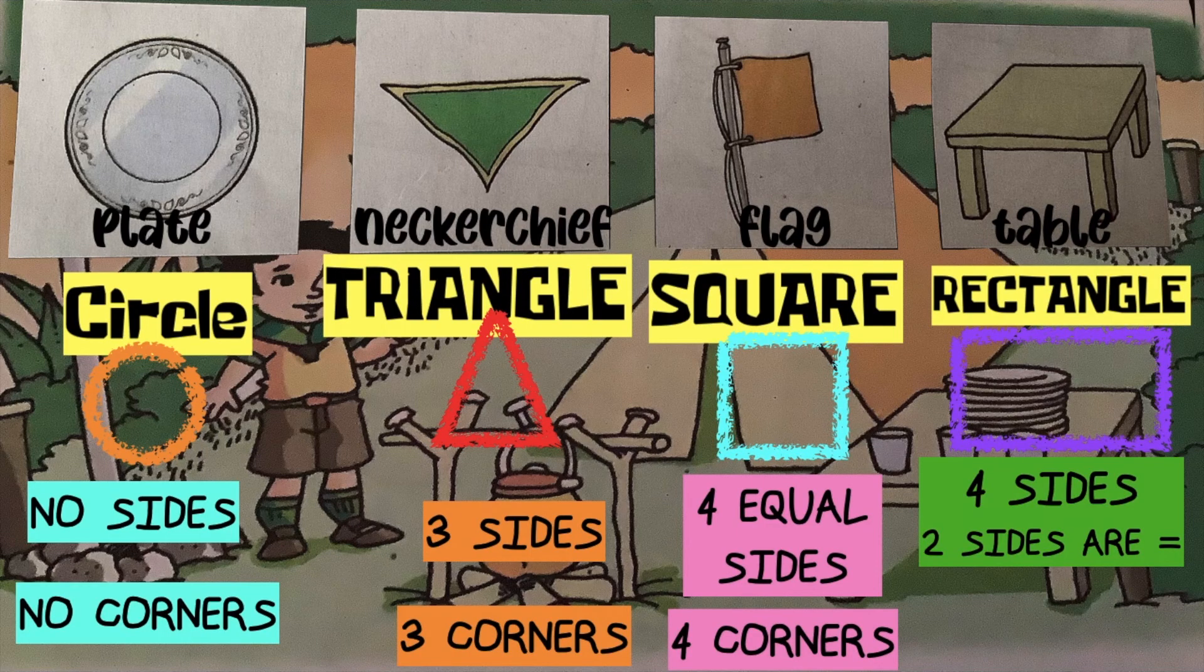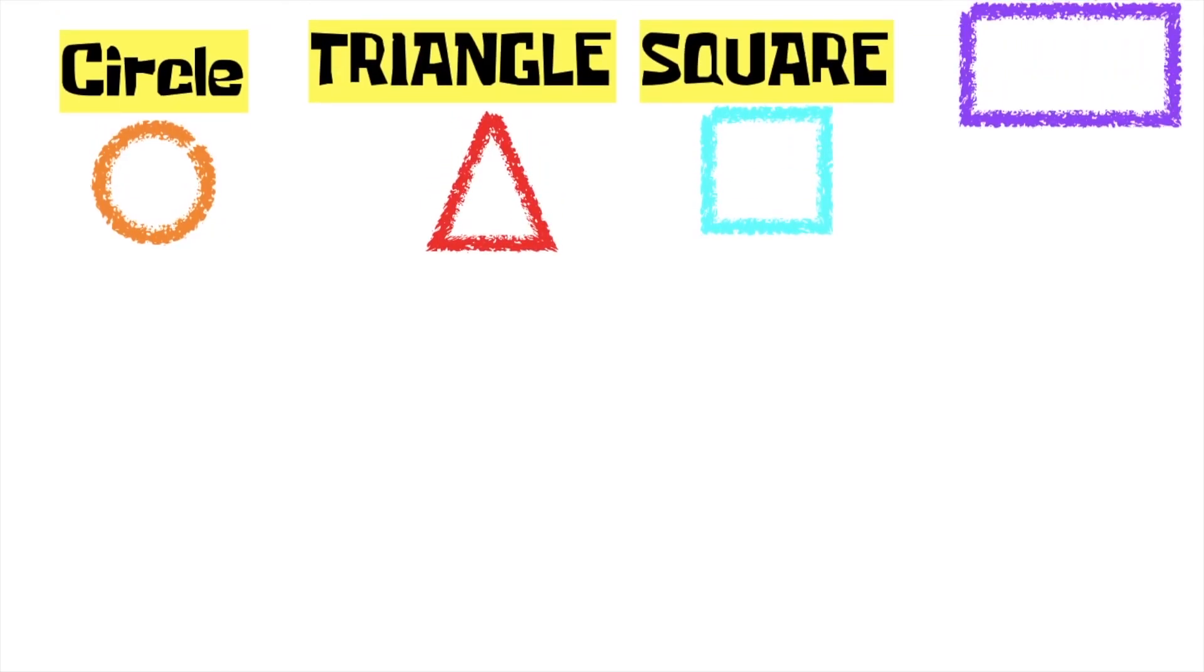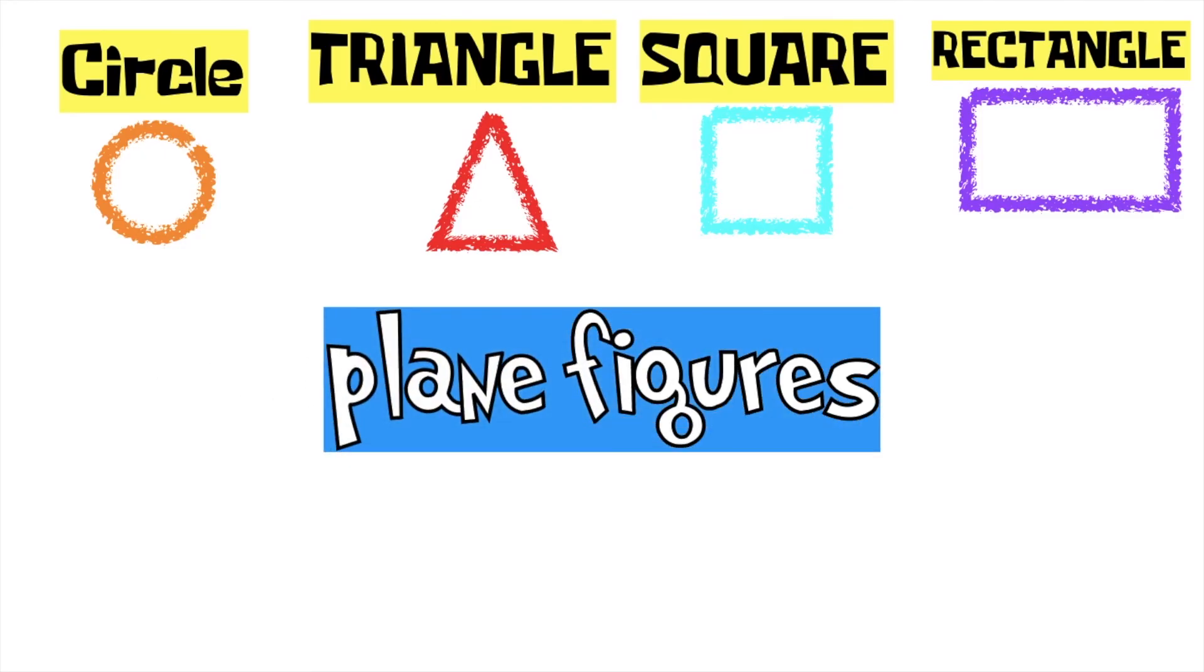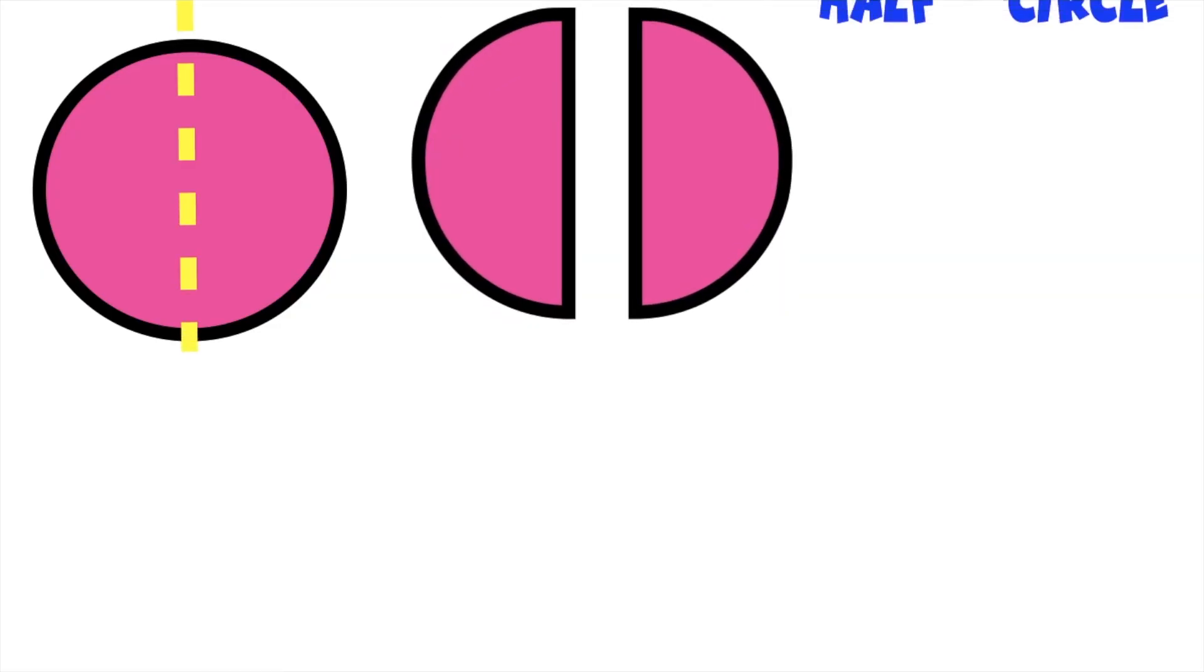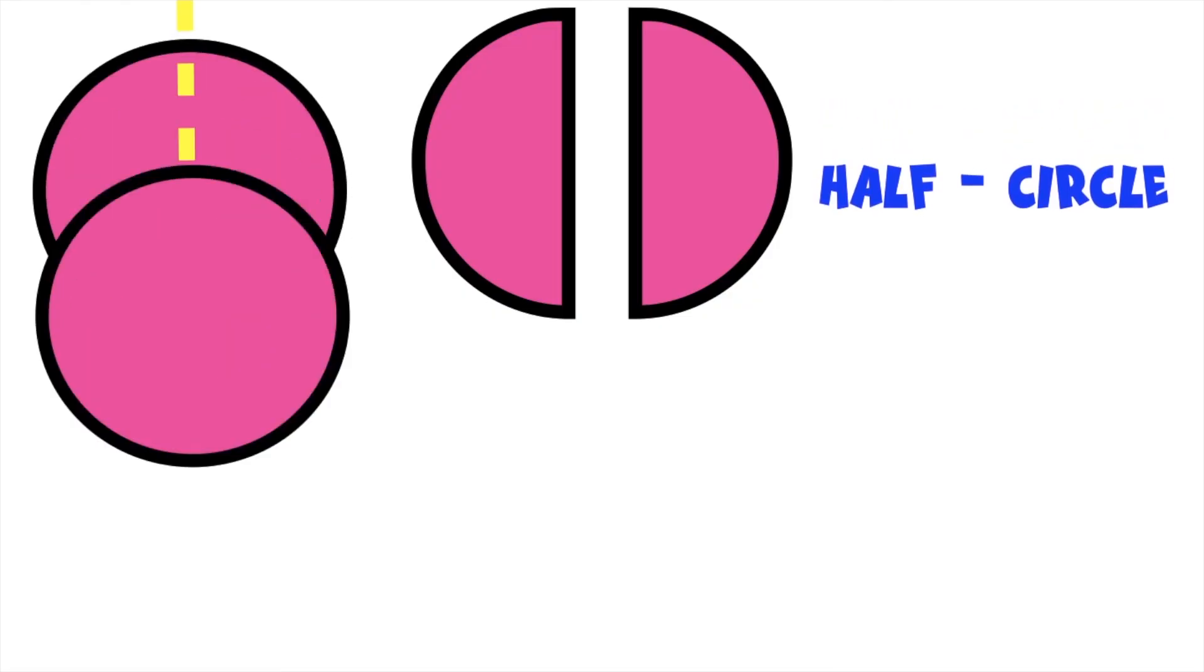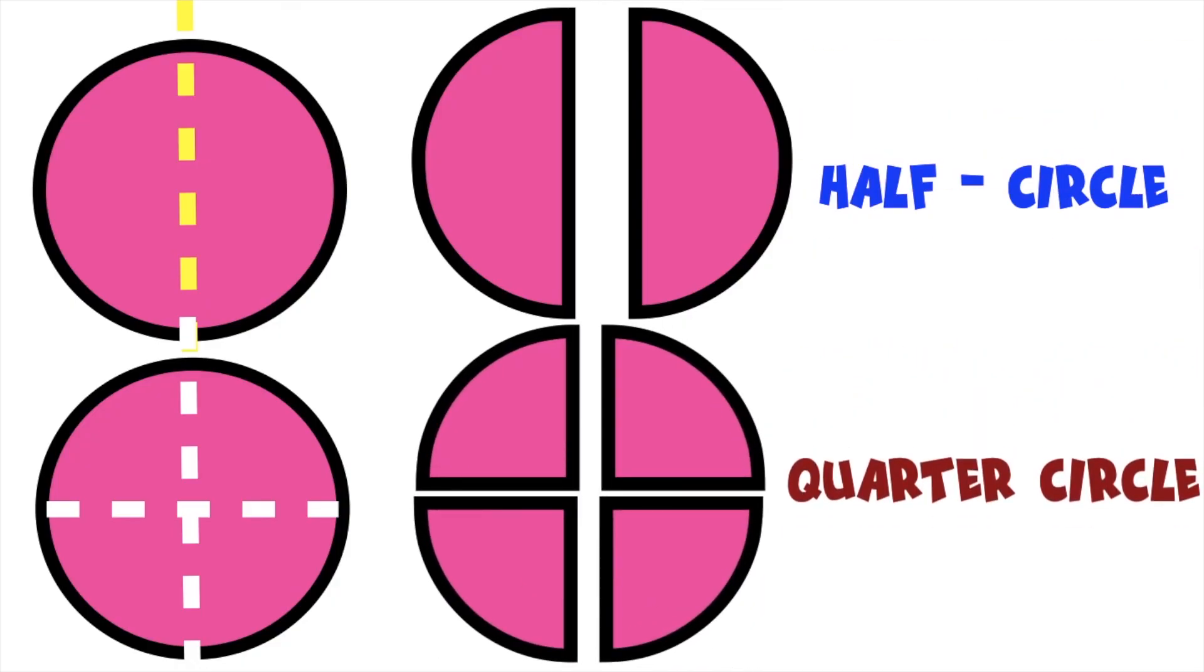What would happen if I cut this circle into two? This circle will become half circle. How about if I cut this circle into four equal parts? This circle will become quarter circle.